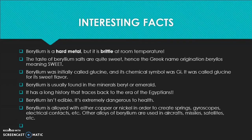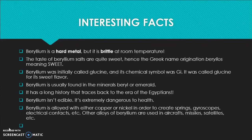My interesting facts about beryllium. Beryllium is a hard metal, but surprisingly it is brittle at room temperature. Beryllium is usually found in the minerals beryl or emerald, and it has a long history that traces back to the era of the Egyptians. Beryllium is definitely not edible — it is extremely dangerous to health. Beryllium is alloyed with other elements such as copper or nickel in order to create springs, gyroscopes, electrical contacts, etc.